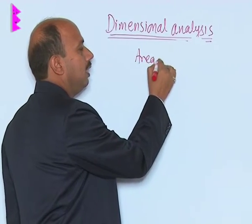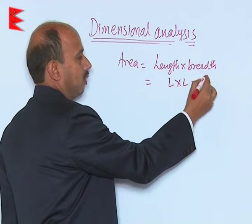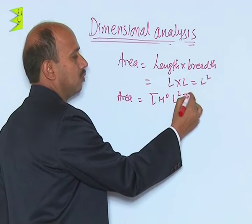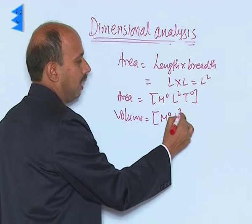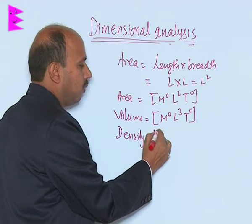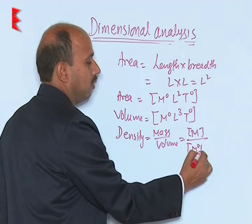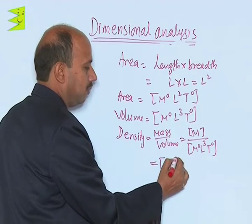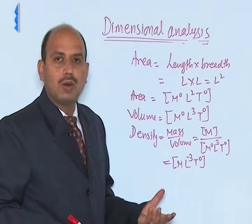For area: area equals length times breadth, so we can write L × L = L². The dimensional formula is M⁰ L² T⁰. Similarly, volume is M⁰ L³ T⁰. For density, which is mass upon volume: mass is M, volume is M⁰ L³ T⁰, so density is M L⁻³ T⁰. We can get the dimensional formula of all quantities using this concept.